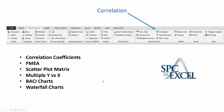This video takes a brief look at the six correlation techniques available in the SPC for Excel software package. These are accessed under the statistical tools on the SPC for Excel menu by selecting correlation. We have correlation coefficients, failure mode and effects analysis, scatter plot matrix, plotting multiple Y values against one X value, BACI charts, and waterfall charts. We're going to start with correlation coefficients.